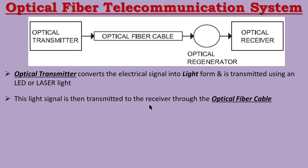The light signal is then transmitted to the receiver through the optical fiber cable. In the communication system, optical fiber cable acts as the communication channel. It is a wired channel — specifically an insulated wired channel — completely insulated, unlike copper or aluminum conductors.